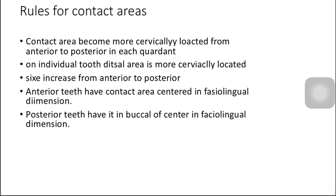Now the rules of contact areas. Number one: the contact area becomes more cervically located from anterior to posterior in each quadrant — meaning as we move from anterior to posterior, contact areas move cervically. Number two: in an individual tooth, the distal area is more cervically located. As we move from anterior to posterior, its size increases. Anterior teeth have their contact area centered in the labiolingual dimension, while in posterior teeth it is centered buccally.